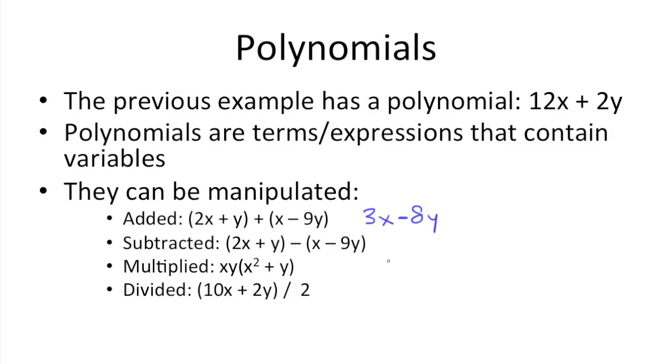You can subtract them, 2x plus y minus x minus 9y. The first thing you would need to do is distribute the negative sign through the x minus 9y, which gets us negative x plus 9y. And this simplifies to 2x minus x, which is x, and y plus 9y, which is 10y.